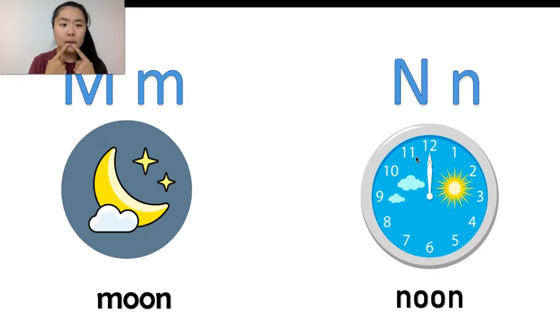M, you use your two lips. So M, M. N, you take your tongue, put it behind your teeth. Noon. So you can see the difference.